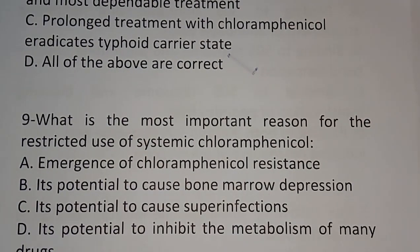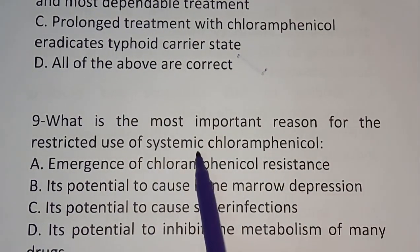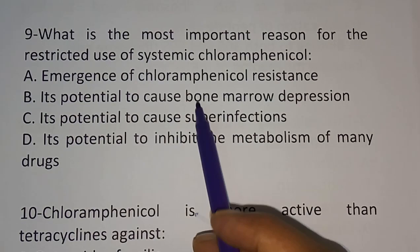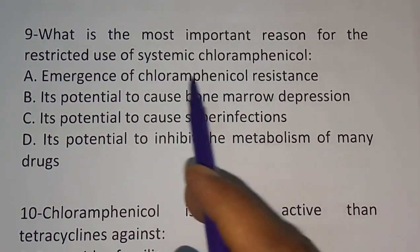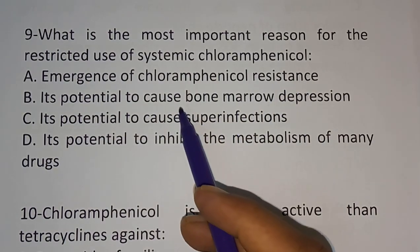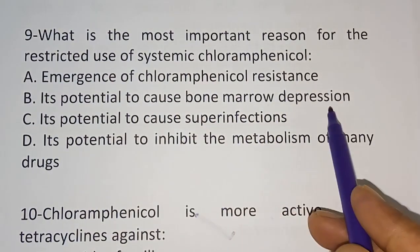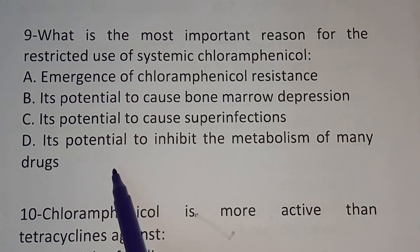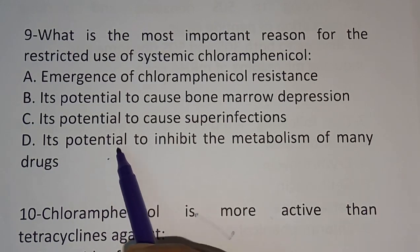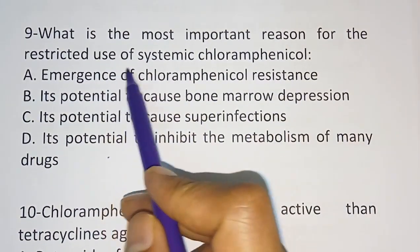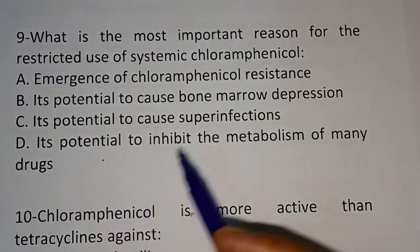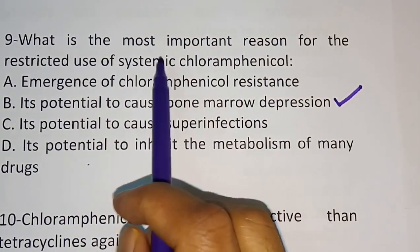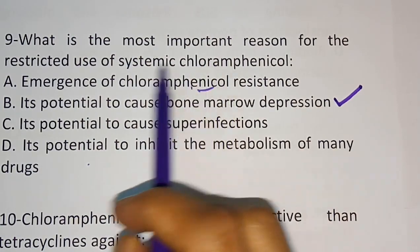Ninth question: what is the most important reason for the restricted use of systemic chloramphenicol? Option A: emergence of chloramphenicol resistance. Option B: its potential to cause bone marrow depression. Option C: its potential to cause superinfection. Option D: its potential to inhibit the metabolism of many drugs. The correct answer is option B — its potential to cause bone marrow depression is why systemic use of chloramphenicol is restricted.